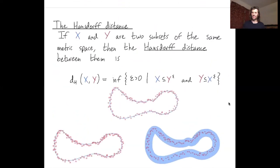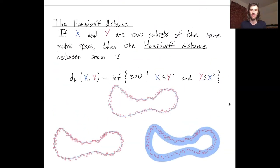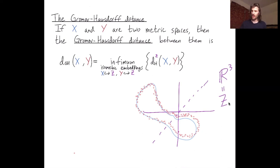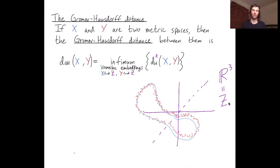The Hausdorff distance is a nice distance between subsets of a metric space that are already aligned. The Gromov-Hausdorff distance is more complicated to define, but it essentially relies on the Hausdorff distance — you just have the extra complication of taking the infimum over all isometric embeddings into some common metric space, and from there you use the Hausdorff distance. Hard to compute, but mathematically quite nice. Thanks.